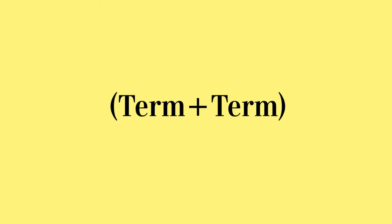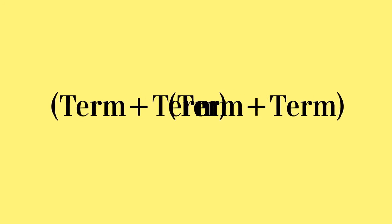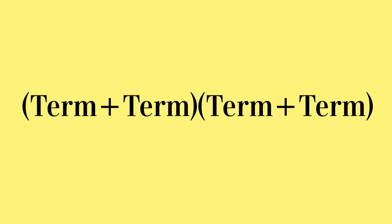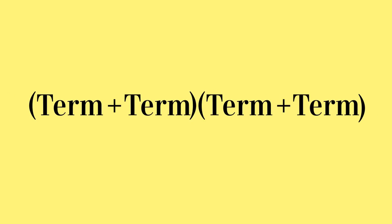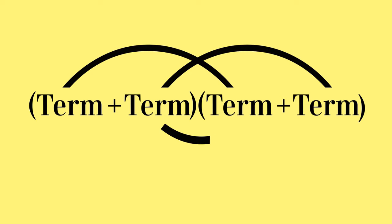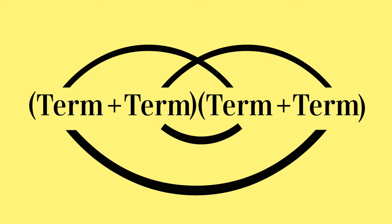Sometimes in algebra, we have two brackets next to each other. This means that everything in the first bracket is multiplied by everything in the second bracket. To expand these brackets, we use a simple method. We call this eyebrow, eyebrow, nose and chin. This shows us which terms we need to multiply together, and it is easy to remember as it makes the expression look like a face.